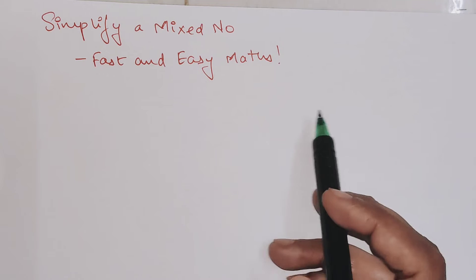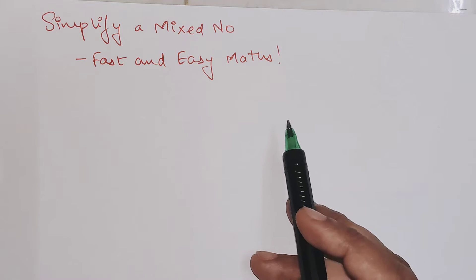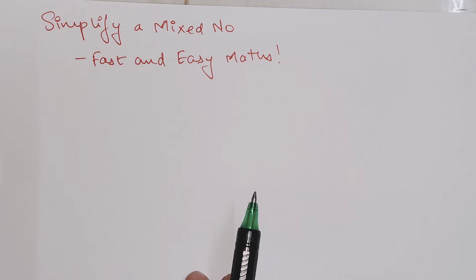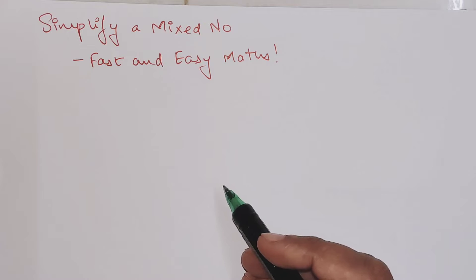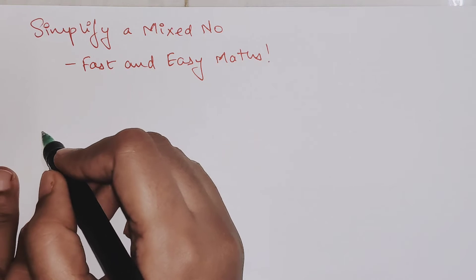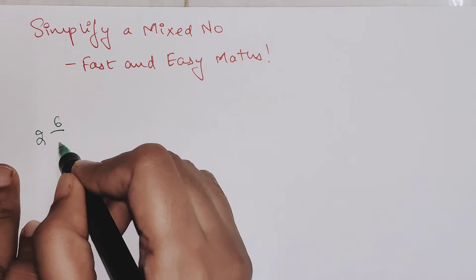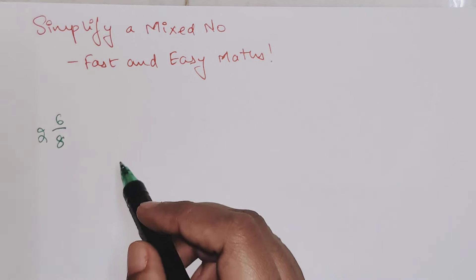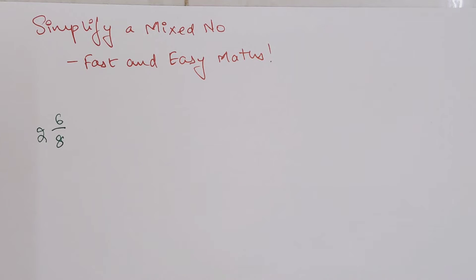Welcome everyone to my channel, Fast and Easy Math, which is dedicated to give you tips and tricks related to mathematics. Today we are going to understand how to simplify a mixed number. Let's say the number given to you is 2 6/8. First, we will convert this using the traditional method.